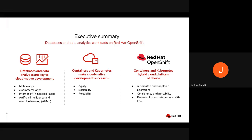Red Hat OpenShift is the container and Kubernetes platform of choice for databases and data analytics workloads. It automates and simplifies operations. Red Hat OpenShift enables a broad spectrum of databases and data analytics software to be automatically deployed and lifecycle managed, empowering system administrators to focus on more strategic tasks. It gives consistency and portability across hybrid cloud, as well as providing customizable development and deployment options. Red Hat also has partnerships and integrations with key database and data analytics ISVs.